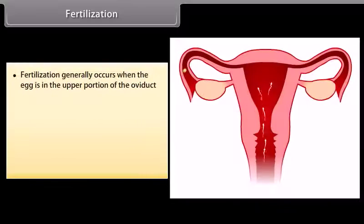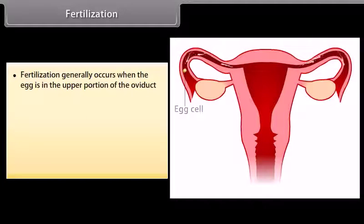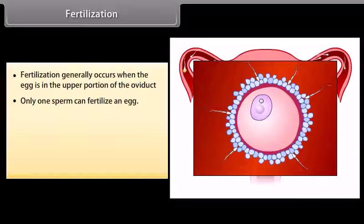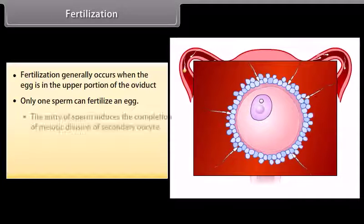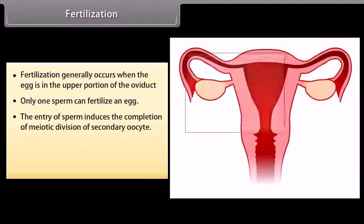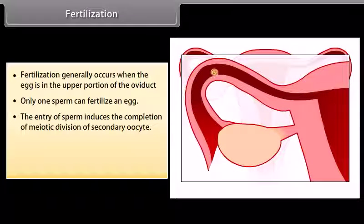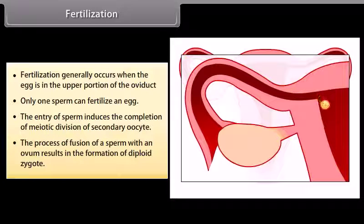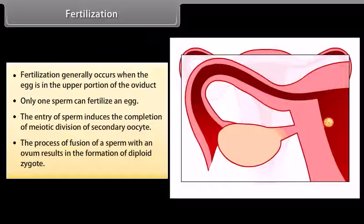Fertilization generally occurs when the egg is in the upper portion of the oviduct. Only one sperm can fertilize an egg. The entry of sperm induces the completion of meiotic division of the secondary oocyte. The process of fusion of a sperm with an ovum results in the formation of a diploid zygote.